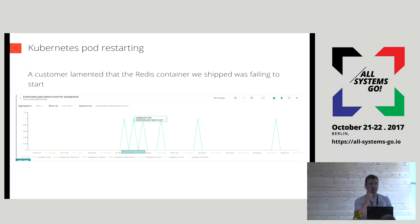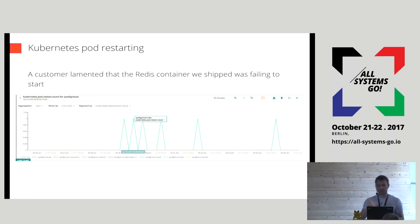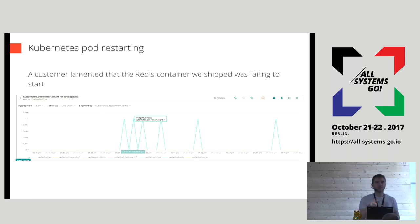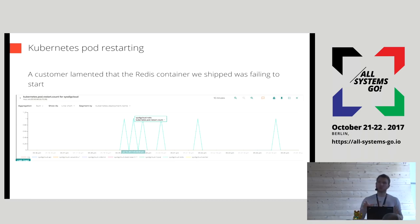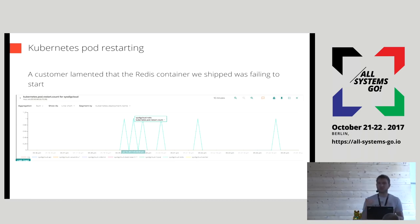There were two interesting things about this problem: first, there were no logs at all from Docker, from Kubernetes, or from Redis itself. Second, among all the containers that could have failed, the one that failed was Redis, which we used very little for our application and didn't customize — we took an off-the-shelf Redis image straight from Docker Hub. And as you can imagine, this ran very well on my machine.